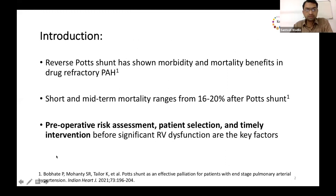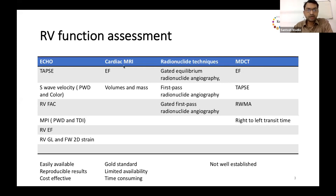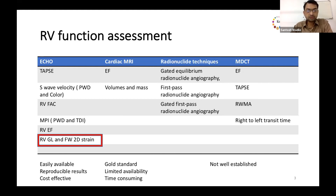Multiple studies have shown the morbidity and mortality benefit of Potts shunt in patients with drug-refractory pulmonary hypertension, but mortality after the shunt ranges around 20%, making it a high-risk procedure. Apart from patient-related factors, RV function is the key factor in determining outcomes. Cardiac MRI is considered the gold standard to assess RV function, but because of logistic issues, echo has been used widely. Among echo parameters, strain parameters have shown to be superior to conventional 2D parameters.